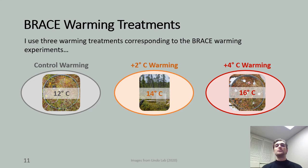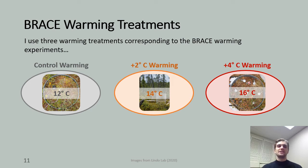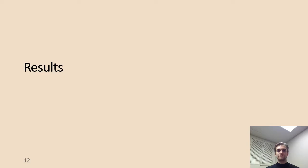In this experiment, I used three different warming treatments forming a gradient to test the effects of warming on energy flux in the BRACE soil food web. The control treatment corresponds to the average BRACE growing season temperature. The plus 2 degrees Celsius warming treatment corresponds to passive warming at BRACE. The plus 4 degrees Celsius warming treatment corresponds to active warming at BRACE.